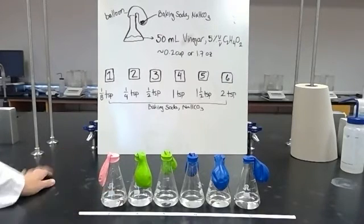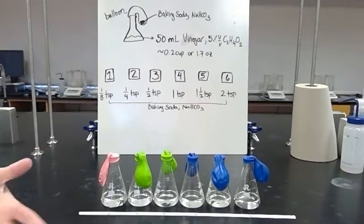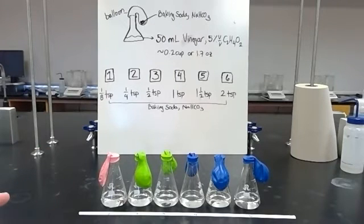In each of these we have our 50 milliliters of vinegar, which is a 5% solution of acetic acid. If you were to do this at home, this would be about a quarter of a cup, a little bit less—0.2 cups or 1.7 ounces—so a little bit more than one and a half ounces of vinegar in each container. Again, you can do this with water bottles instead of flasks.